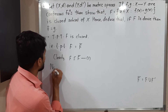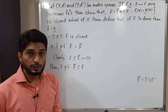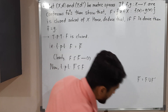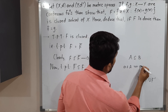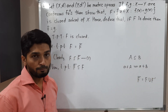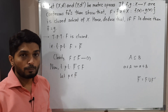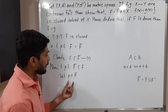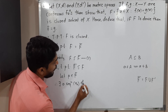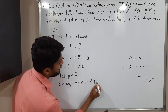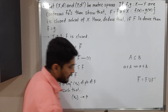To prove F̄ ⊆ F, recall how to prove A ⊆ B: take one point from A and prove it belongs to B. Using the same technique, let us take a point p ∈ F̄. Since p belongs to F̄, there exists a sequence {xₙ} of points of F such that xₙ converges to p.